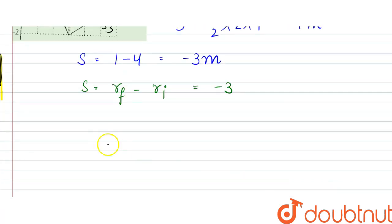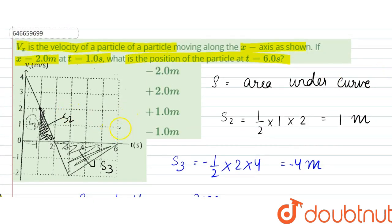From here what we could say is that rf would be rf can be written as ri minus 3. So initially it was at 2 meters minus 3, rf, so it would be at minus 1 meter. So final position would be minus 1 meter.